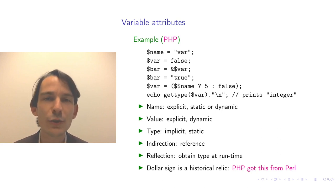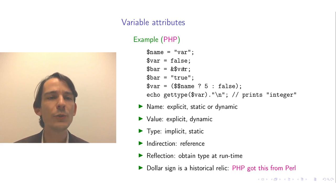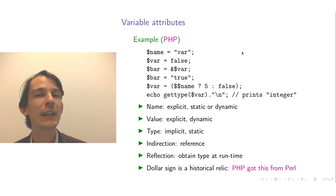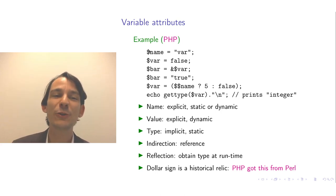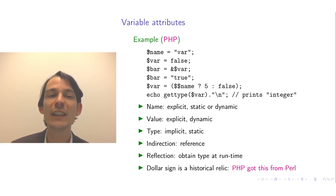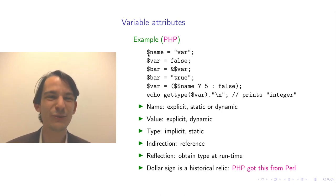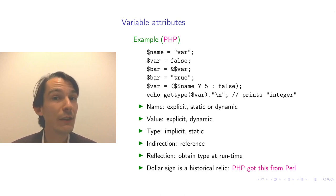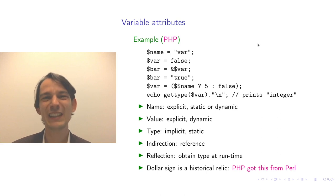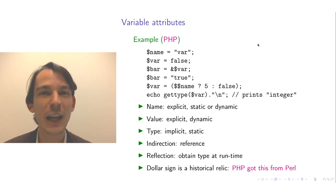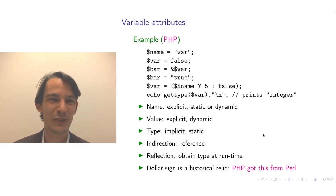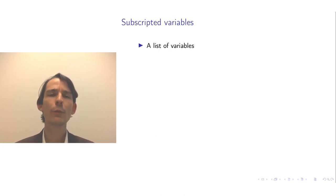You might ask why PHP variable names start with a dollar sign. This turns out to be a historical relic: PHP looked to the Perl language, where the dollar sign stands for scalar values such as integers, and different characters give different meanings to variables.